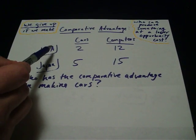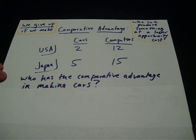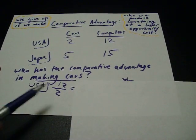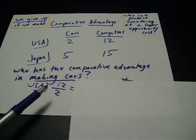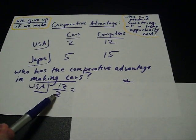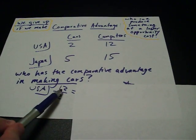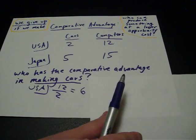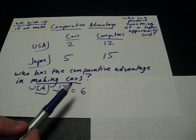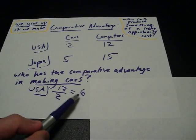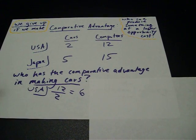For the United States, for every car they produce, they give up the production of 12 computers. Using we give up over if we make: if they make cars, they can produce two; what they give up is computers, which is 12. So 12 over 2 reduces to 6, meaning for every car the United States produces, they give up the opportunity to produce 6 computers.